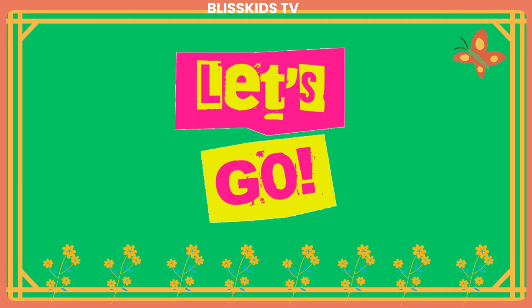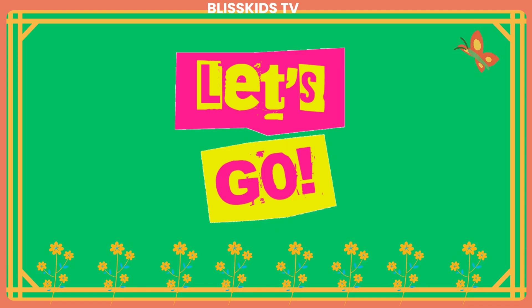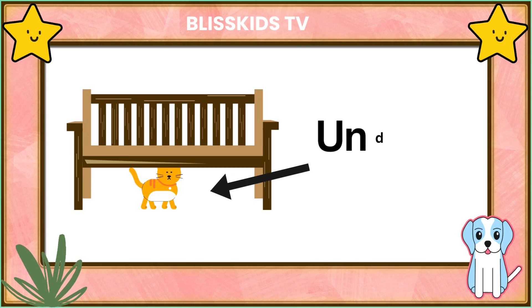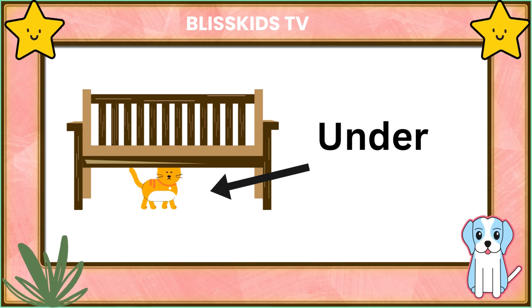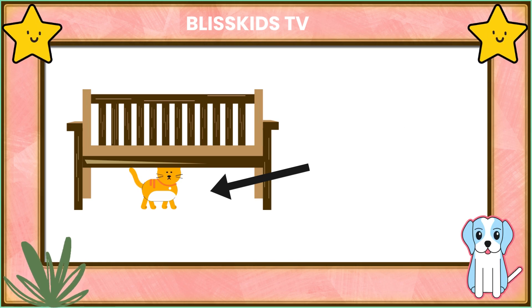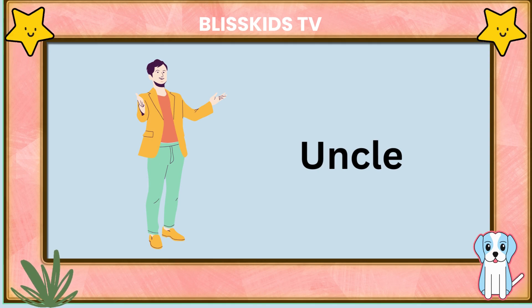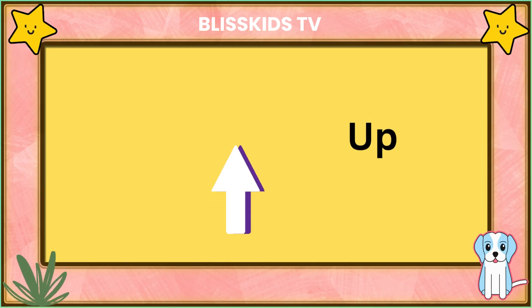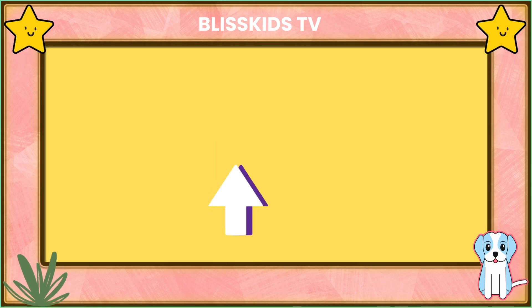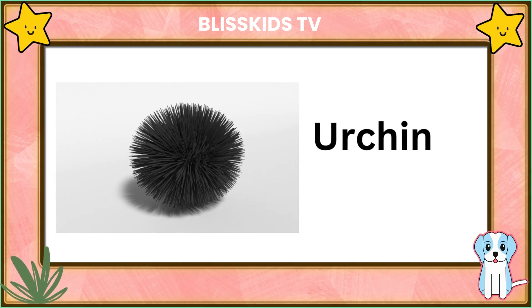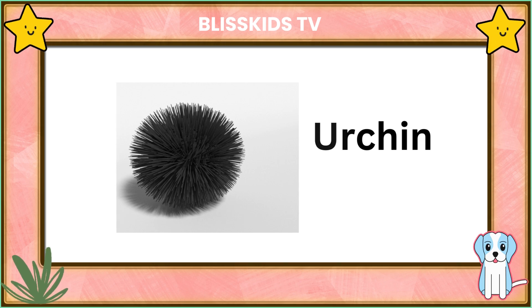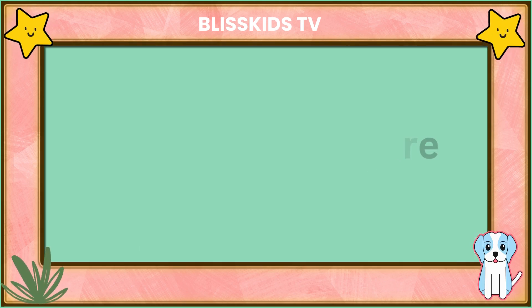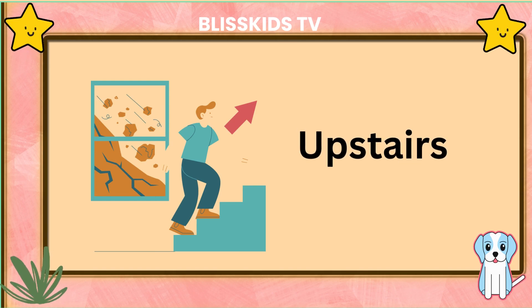Let's go on and learn the words that begin with the letter U. Under. Uncle. Up. Urchin. Umpire. Upstairs.